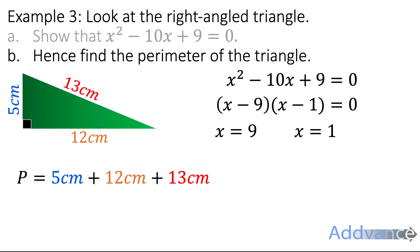And we add them all together to find the perimeter, and we get 5 + 12 + 13. That is equal to 30 centimetres, and that is the final answer. We find the perimeter of the triangle.